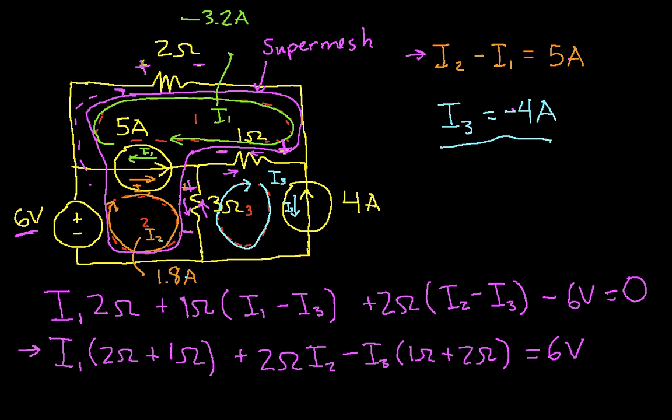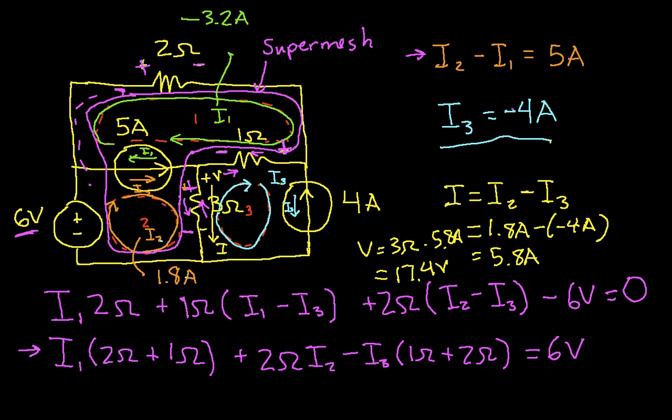So, depending on what you want to know, you're either done or you're not. So, for example, if you wanted to know the current flowing through the 3 ohm resistor, so suppose I'm interested in finding this current, we'll call it I. Well, we have I would be I2 minus I3, which in this case would be 1.8 amps minus negative 4 amps, which would be 5.8 amps. If I then wanted to find the voltage across the 3 ohm resistor, it would be this current times 3. So, the voltage, if we call this V, we can have V is 3 ohms times 5.8 amps, which will be 17.4 volts. So, I can find similarly other voltages and currents as necessary through the circuit.